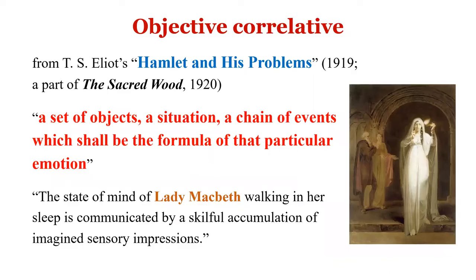O is for Objective Correlative — a concept introduced by T.S. Eliot in his essay 'Hamlet and His Problems,' part of The Sacred Wood (published 1920). Eliot's definition: 'A set of objects, a situation, a chain of events which shall be the formula of that particular emotion.' In other words, when you portray an emotion in a work, you must provide readers with corresponding objects, situations, or chains of events they can connect with that emotion.